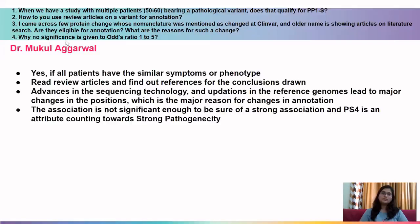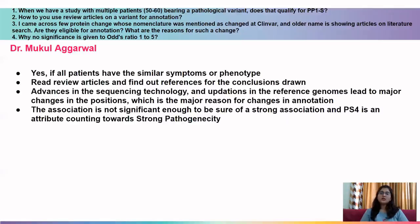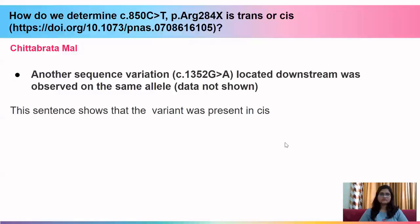Fourth question: why is no significance given to an odds ratio of 1 to 5? The PS4 attribute is assigned on the basis of odds ratio and represents strong pathogenicity evidence. To assign strong pathogenicity, we need to be very sure of the association between the disease and the variant. That is why we take very stringent cutoffs and only consider odds ratio greater than 5 for annotation of the PS4 attribute.